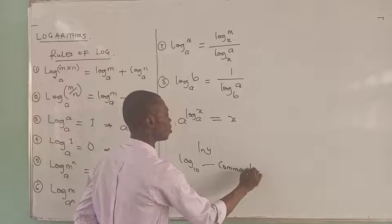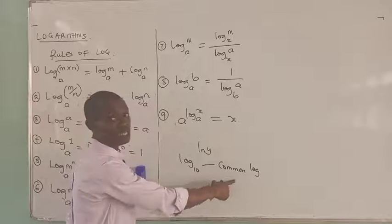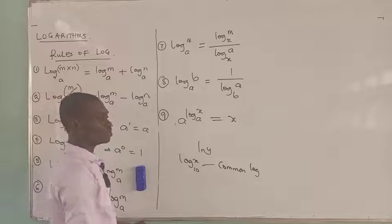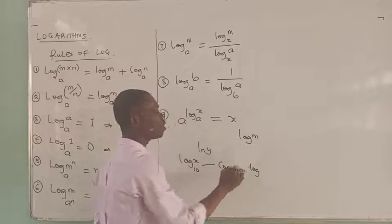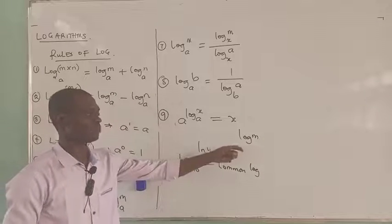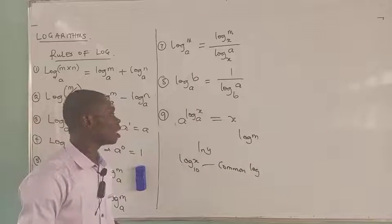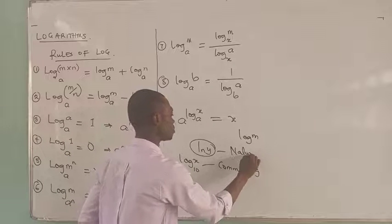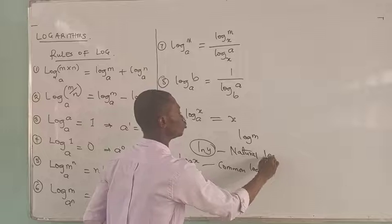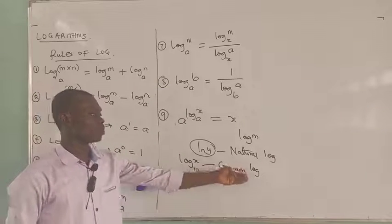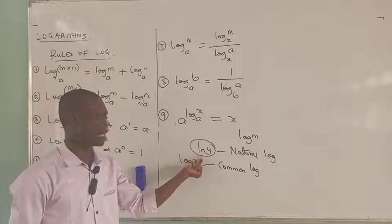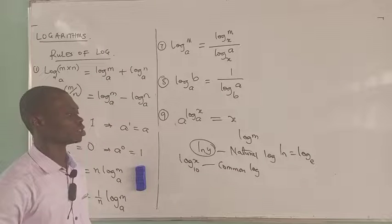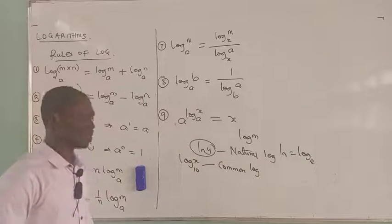We usually call it the common logarithm. In most cases, we don't write the base 10. So if you see any logarithm written as log M without a base, this is a common logarithm — the base is 10. But if you have ln, this is called the natural logarithm. So we have two special kinds of logs: the natural logarithm, also called ln, and the common logarithm to base 10. The natural logarithm, ln, stands for logarithm to base E.